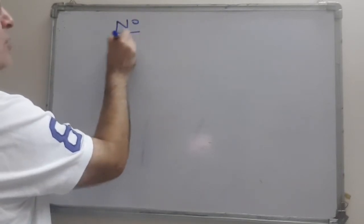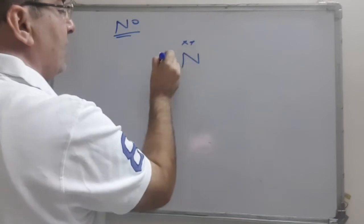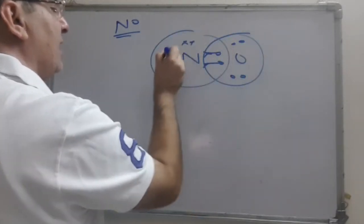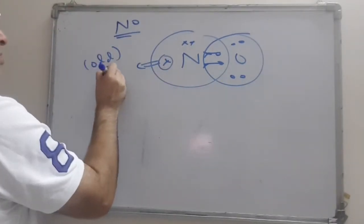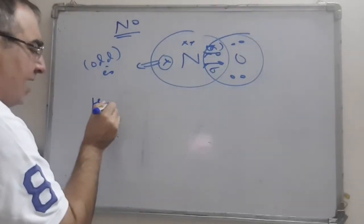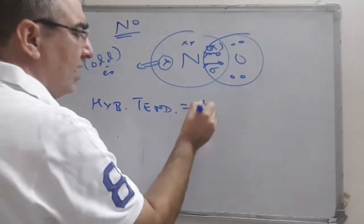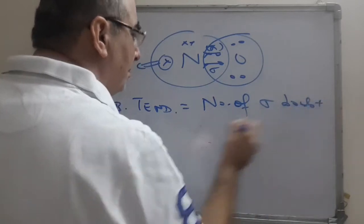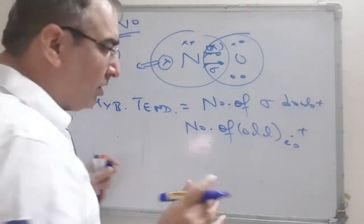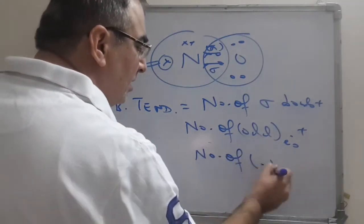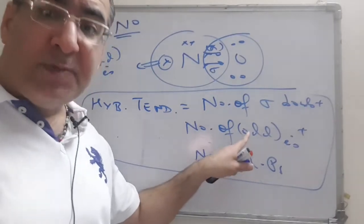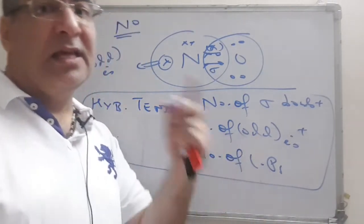Suppose I am talking about NO. The odd electron will come over nitrogen. Two bonds are there. Now, in order to find the hybridization tendency, one very simple formula is: number of sigma bonds plus number of odd electrons (if present — not always) plus number of lone pairs. This is the best method to find hybridization tendency in any given molecule.